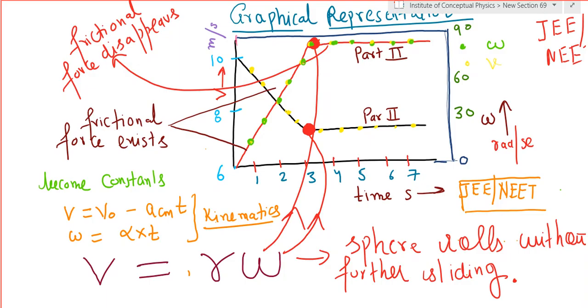V equals r omega. If you see the two kinematic equations: V equals V naught minus a_cm T, and omega equals alpha T, you can put V equals r omega.